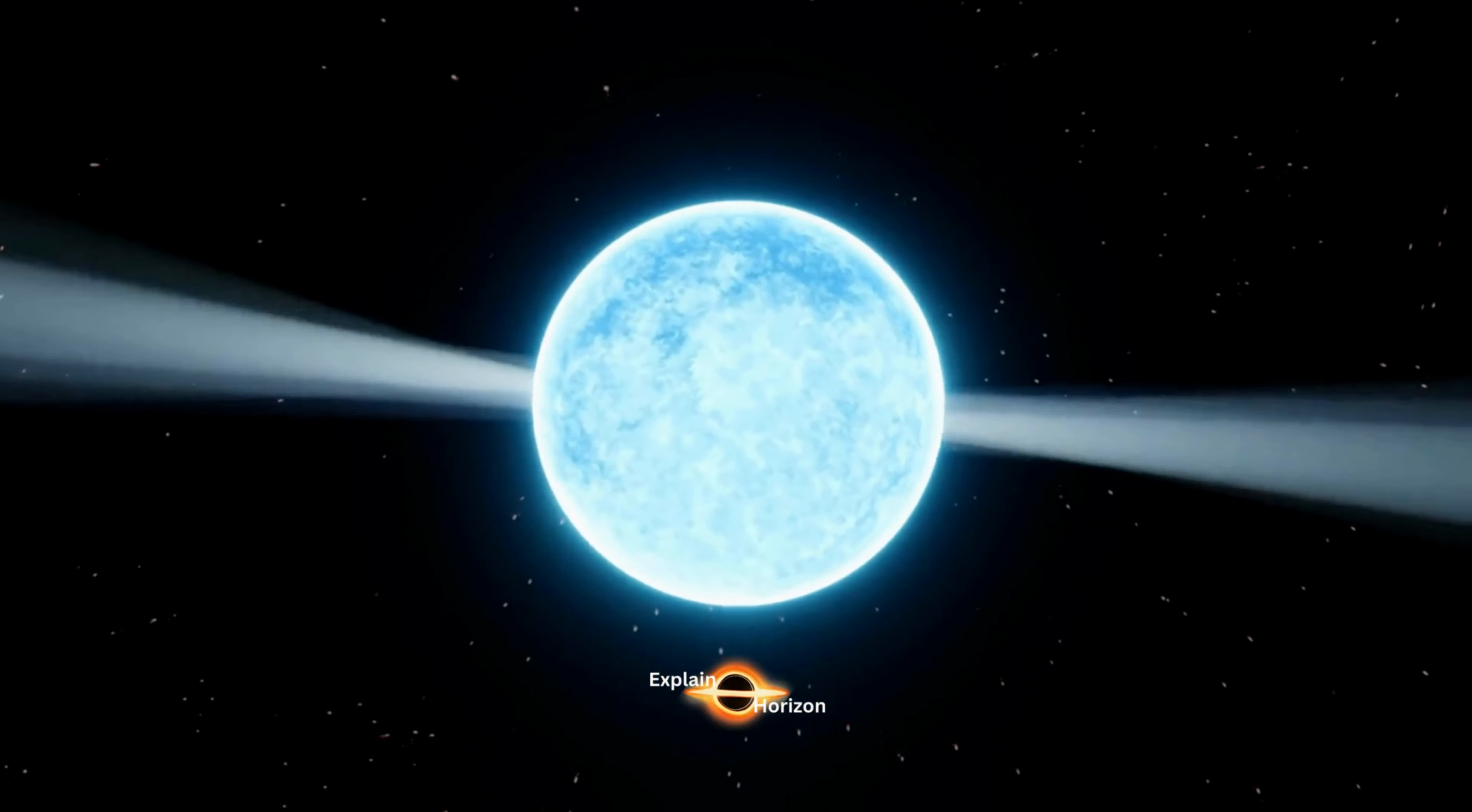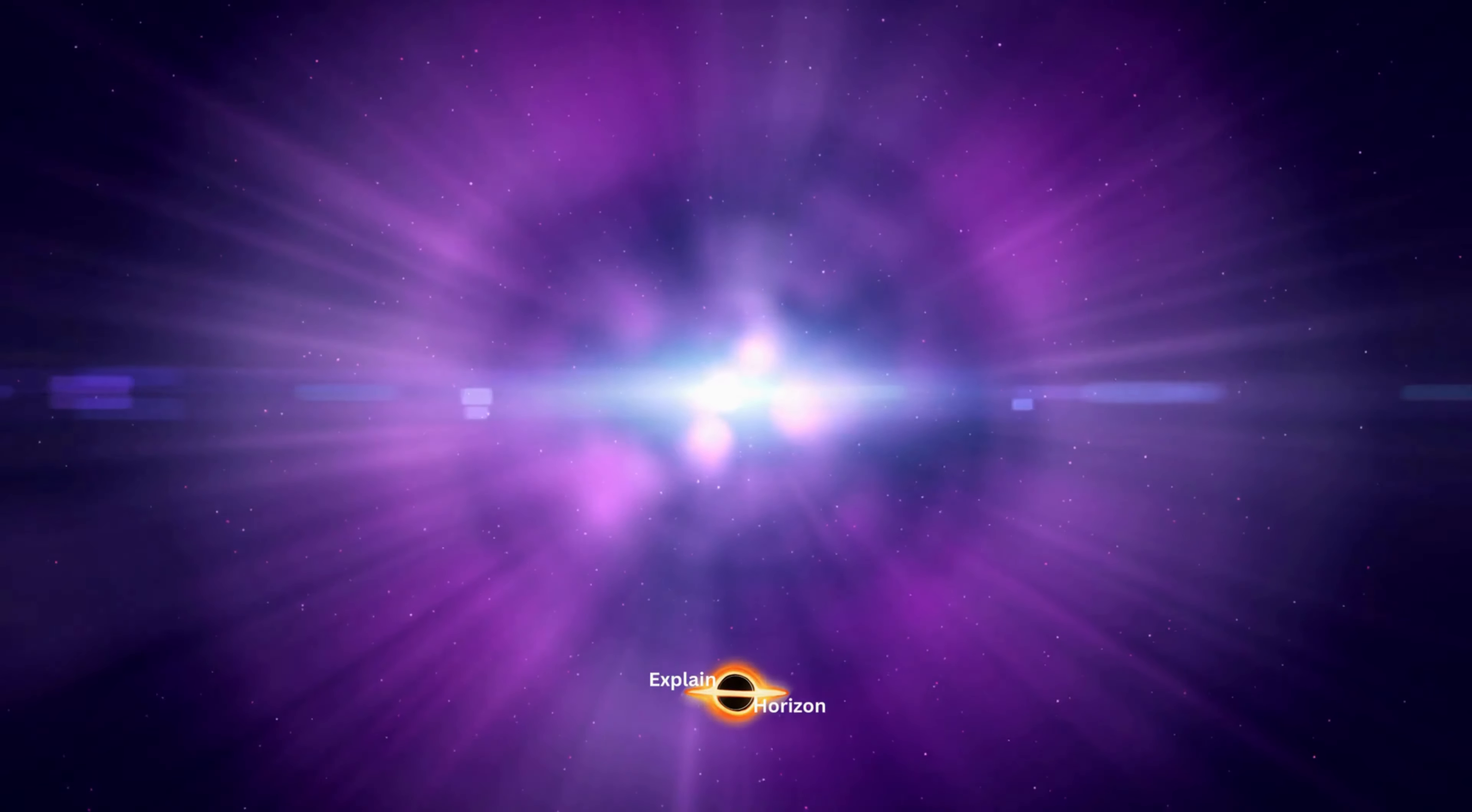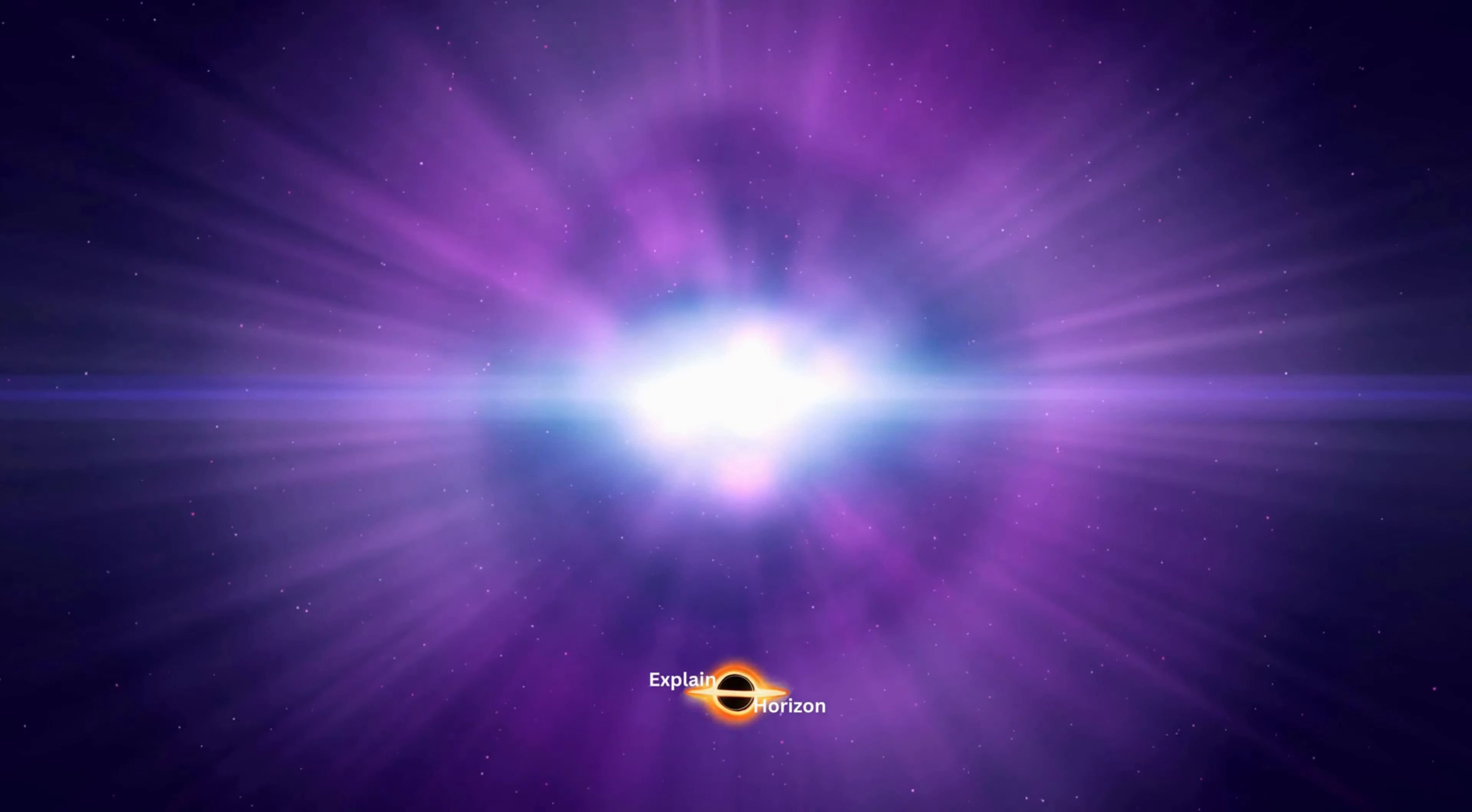Neutron stars also rotate at incredible speeds, with some spinning hundreds of times per second. This rapid rotation causes the emission of high-energy particles, creating bright bursts of X-rays and gamma rays that can be detected by space telescopes.